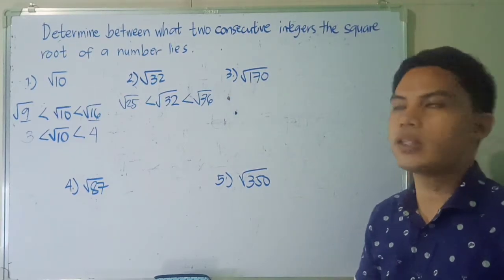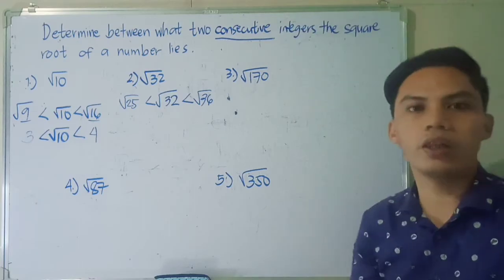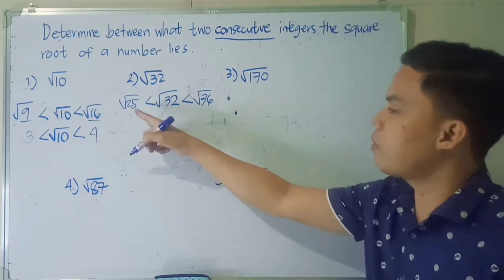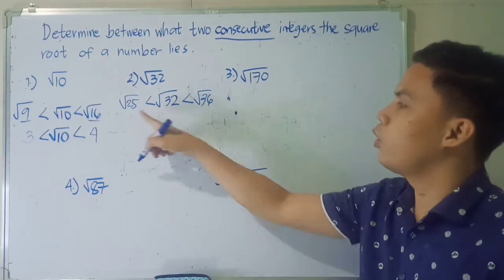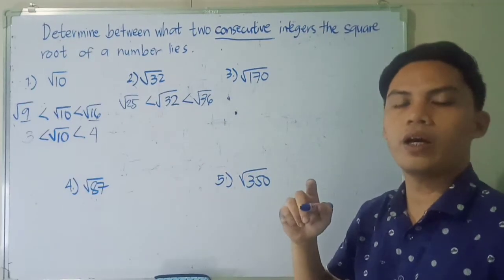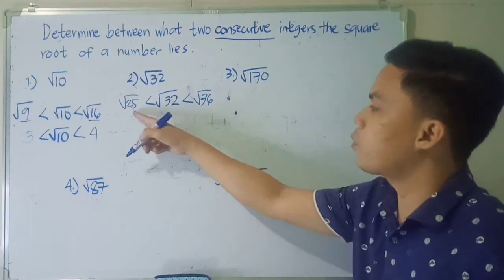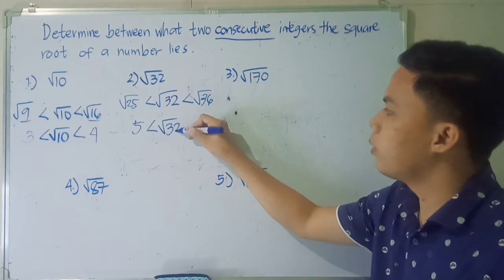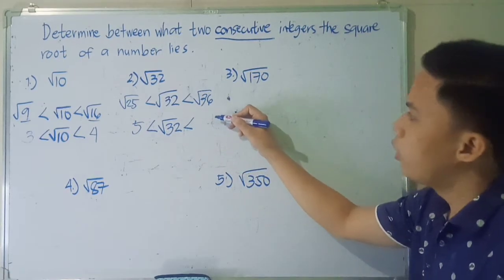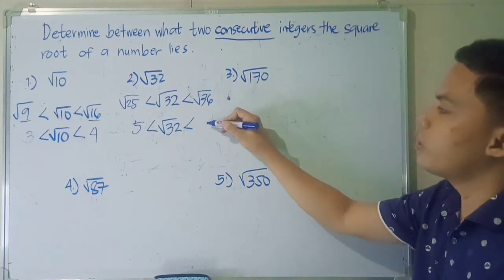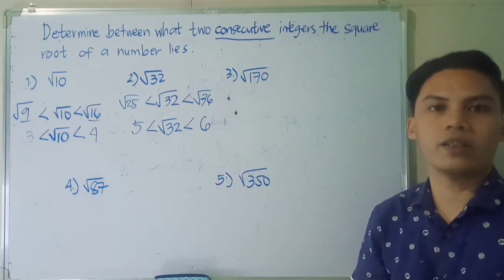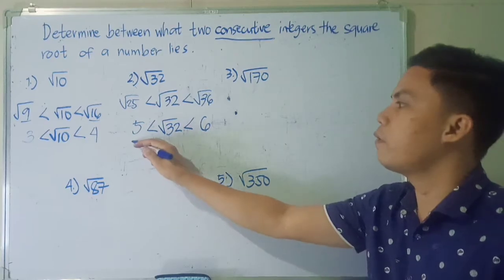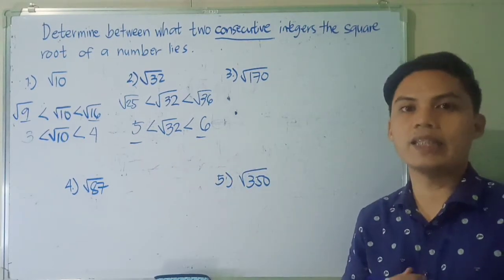They must be consecutive since our instruction requires consecutive integers. Now we simplify by getting the roots of the two perfect squares. The square root of 25 is equal to 5. Bring down square root of 32. Then square root of 36 is 6. Therefore, square root of 32 is between 5 and 6.